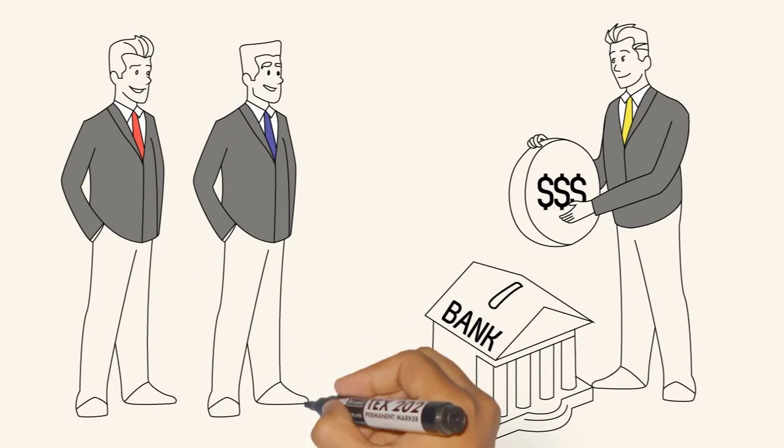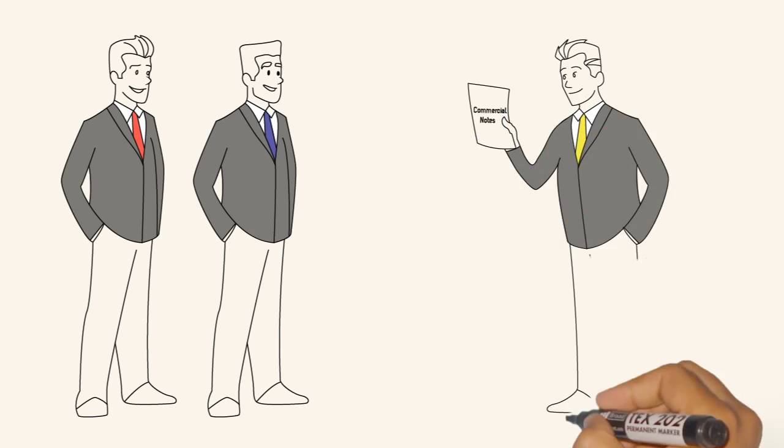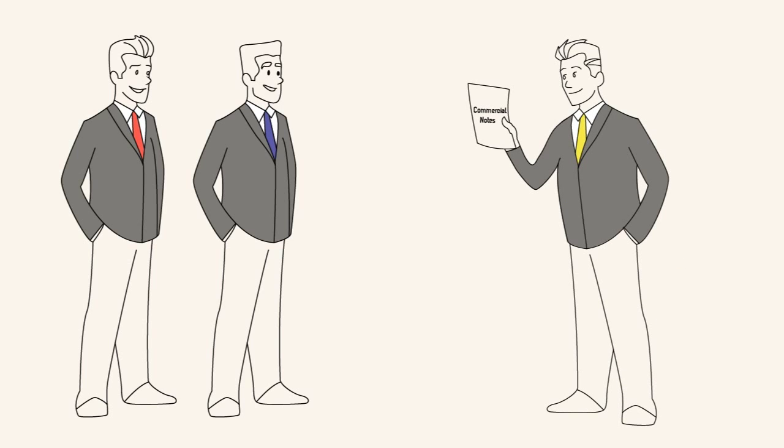Like Tom, who funded Bill's loan and Frank's so they could buy their properties. Now Tom holds the secure commercial notes and receives monthly income too.